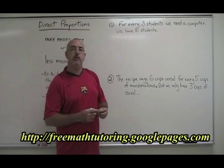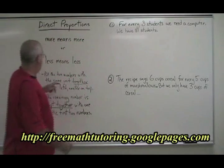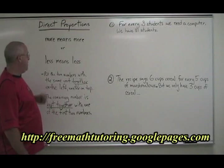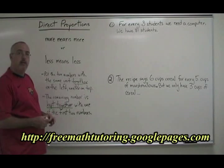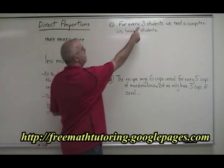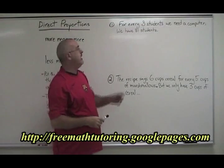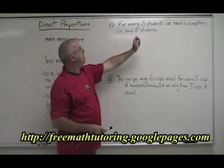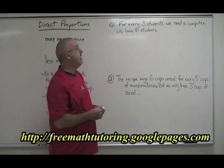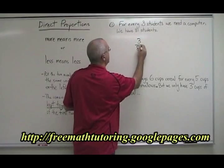How do you solve a direct proportion? Here's the first rule: put the two numbers with the same unit together on the left, smaller on top. In this problem, that is the three students and the 81 students — the unit is students. We put those two numbers together with the smaller one on top.